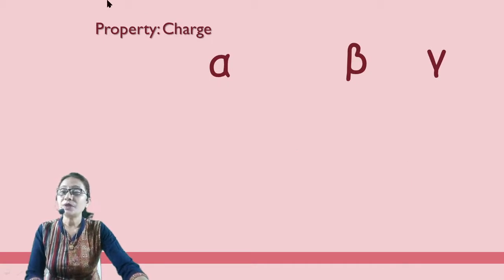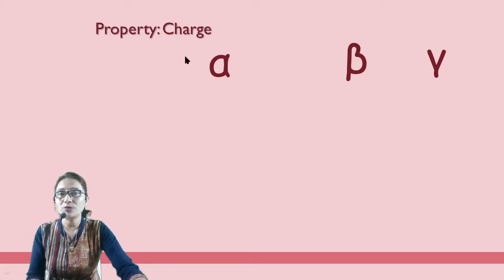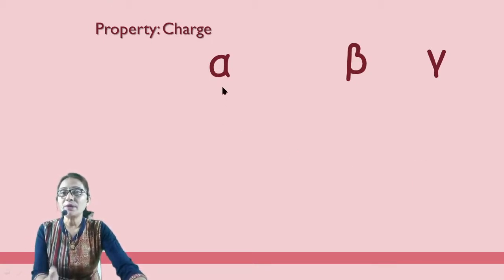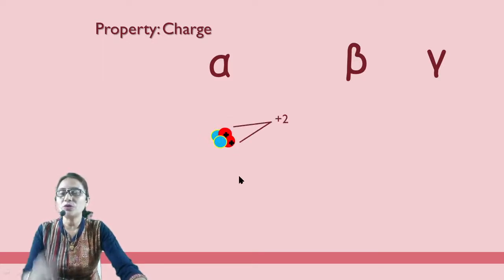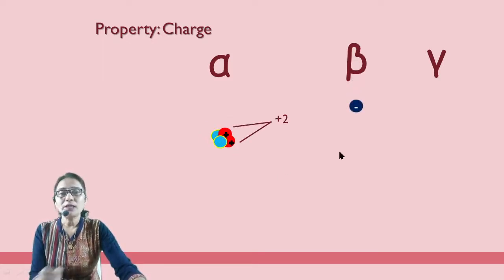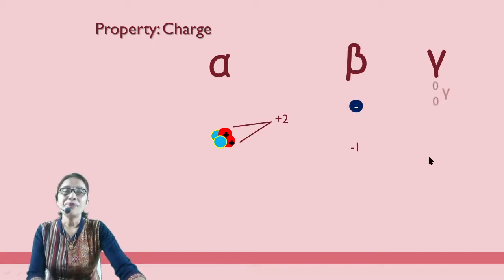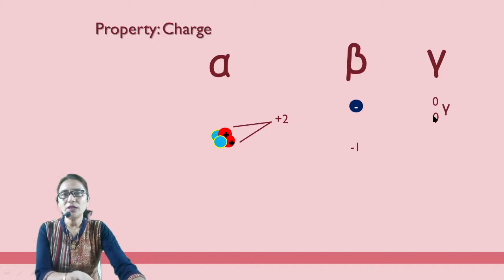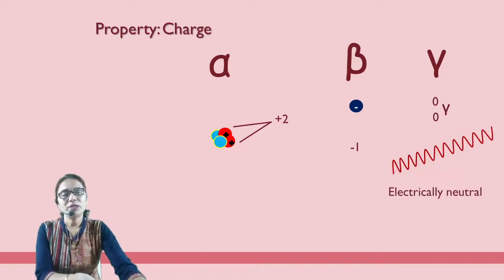Third property is charge. Alpha particle has a charge of +2, so it has a positive charge. Beta particle has a negative charge, because it is an electron. Gamma particle has neither proton nor electron, so it is electrically neutral.